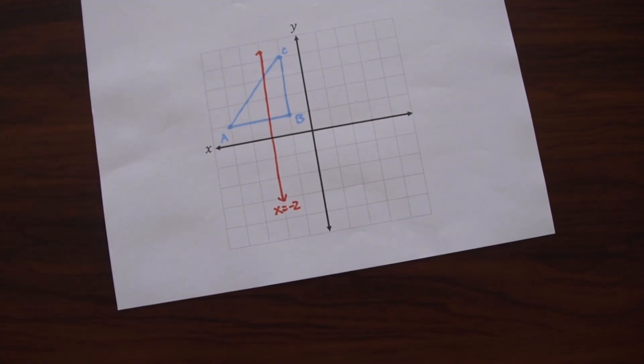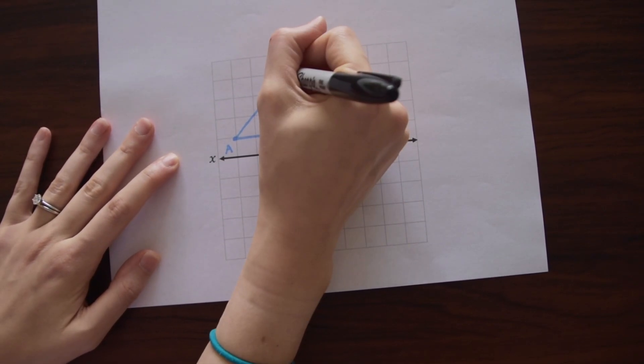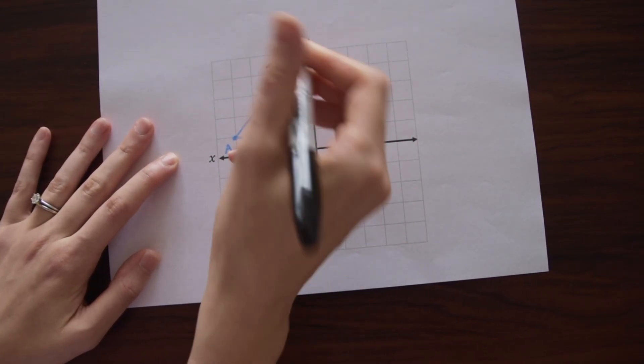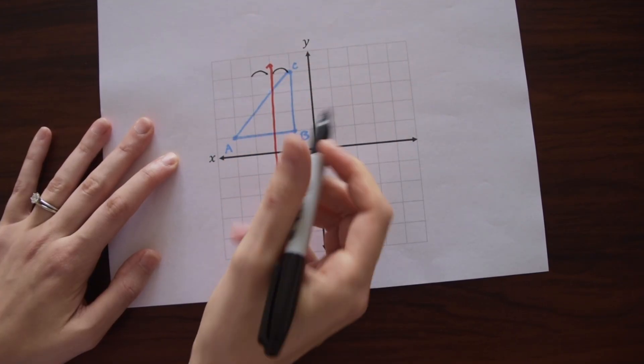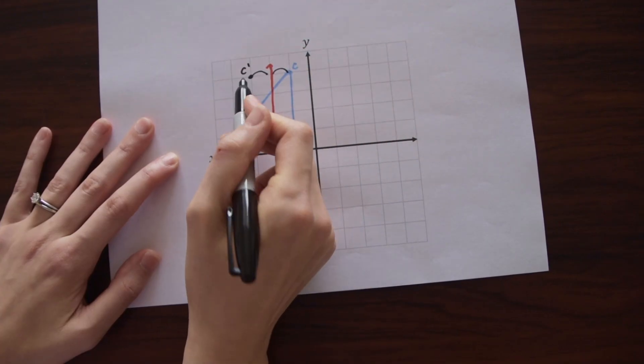And then now we're doing the same thing, just the shape is on itself. So it might look more confusing, but it's really the same thing. So we start with point C. Notice that it's one unit away from our line X equals negative two. So we're just going to go one unit to the left on the other side of X equals negative two and make our new C prime point.